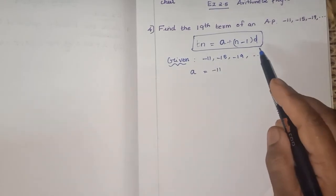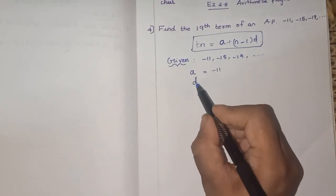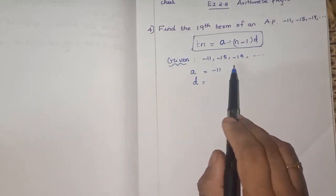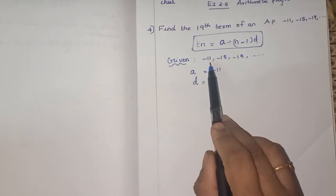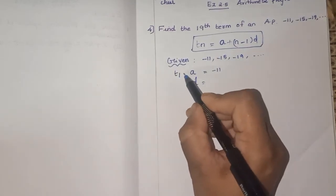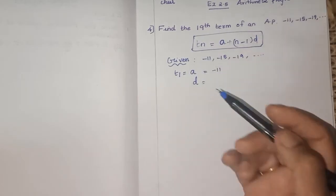Next, what is called D? D is the common difference, the difference between the two consecutive terms of an AP. So here what is this first term? We call it as T1. N is 1, that is the first term. So T1, otherwise we call it as A.